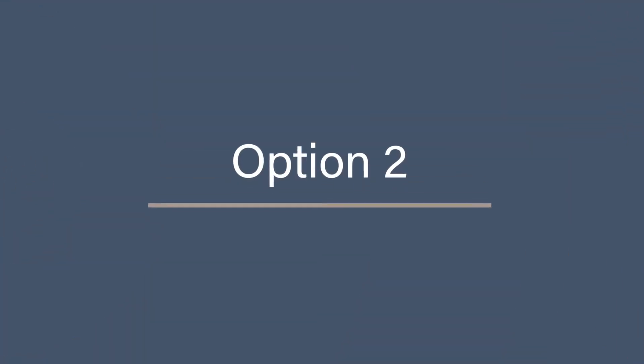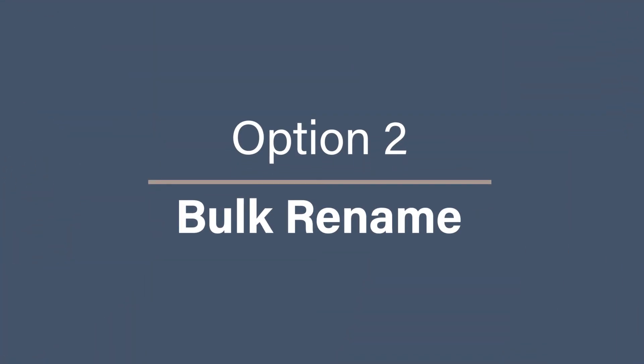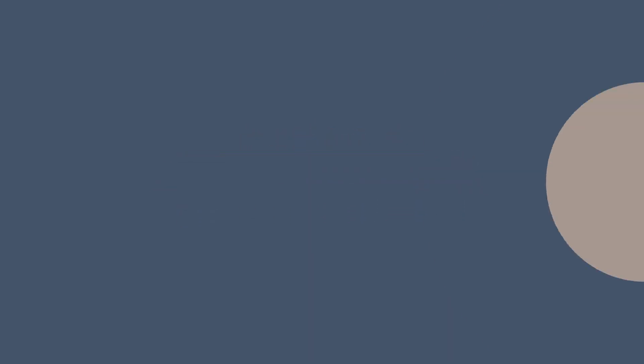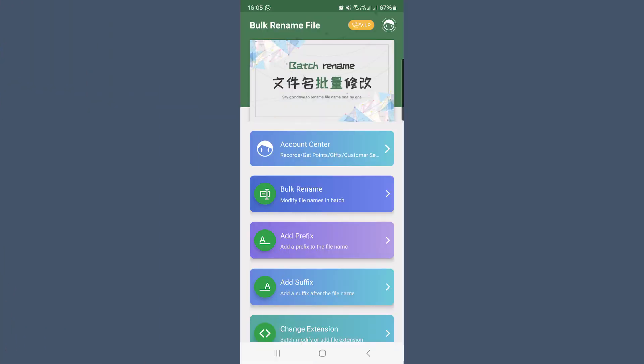Option two: bulk rename with a bulk rename app. You can't rename bulk photos like you can on a PC or Mac without the help of an app. My current favorite is an app called Bulk Rename File app — it has a little green file logo. Download the app from the app store and you'll have to give the app permission to access your photos.